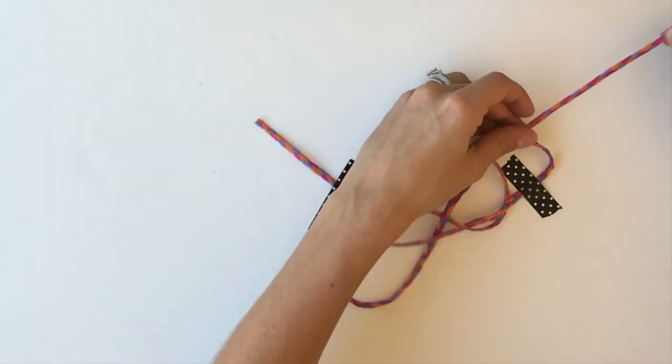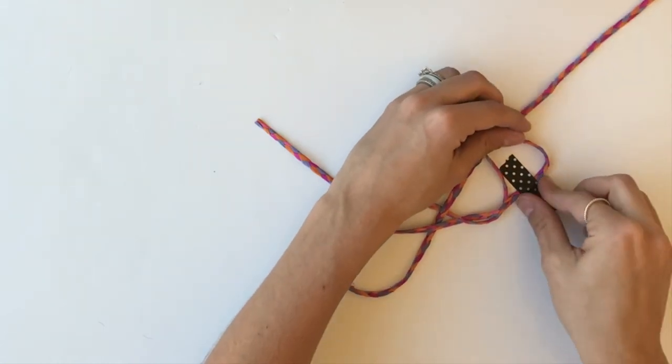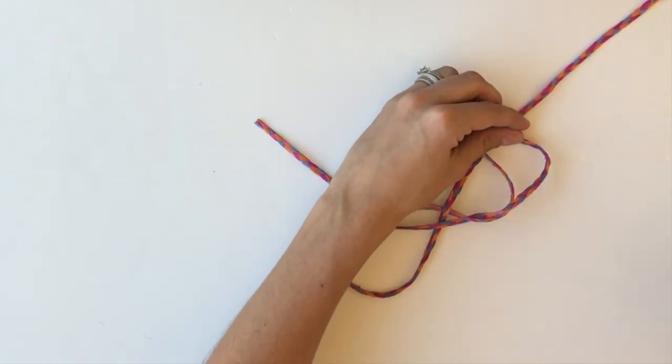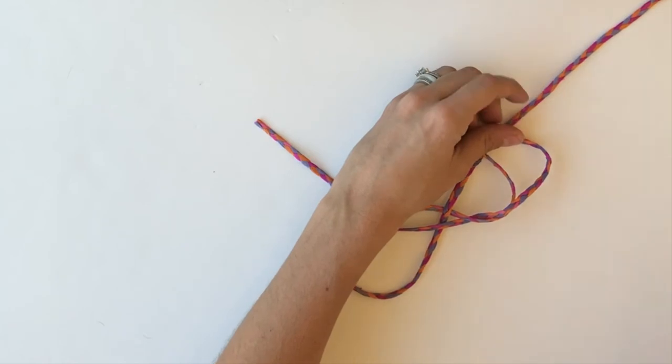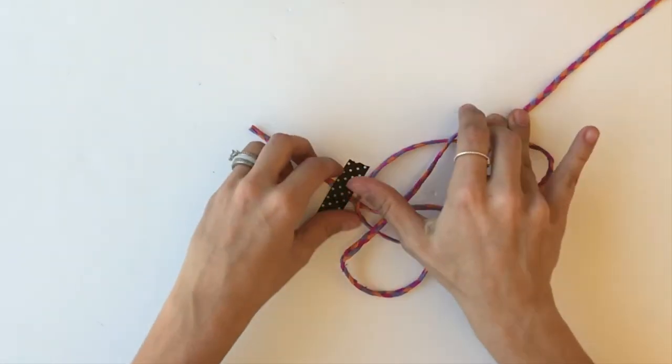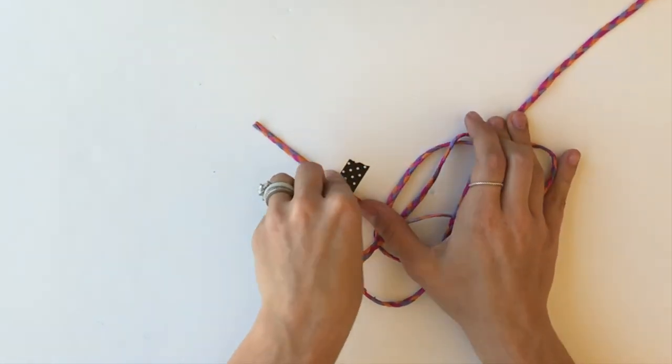Now at this point you have all of your knot portions made. All you're going to do is remove the washi and gently fudge your knot a little bit here and there until it's nice and tight and forming the shape of the heart.